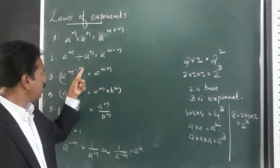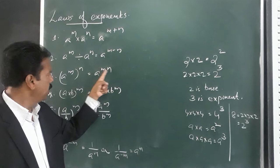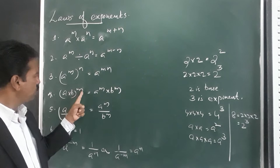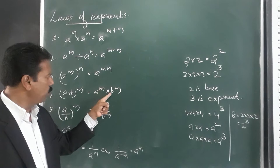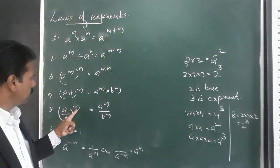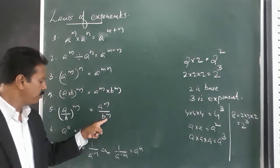The third rule: a raised to the power of m, the whole raised to n, equals a raised to the power of m times n. The fourth rule: a into b the whole raised to m equals a raised to m into b raised to m. And a by b the whole raised to m equals a raised to m divided by b raised to m.